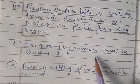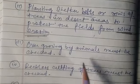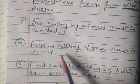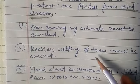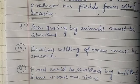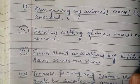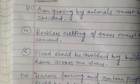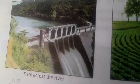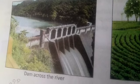Overgrazing of animals must be checked and restricted. Reckless cutting of trees must be stopped — deforestation must be discouraged and stopped. Floods should be avoided by building dams across the river.